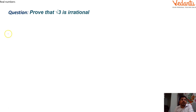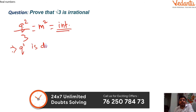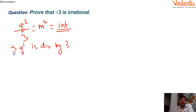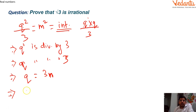From q² = 3m², we can rearrange to get q²/3 = m². Since m² is an integer and q²/3 is an integer, this implies q² is divisible by 3. Since q² = q × q, by the same argument, q is also divisible by 3. So we can write q = 3n for some integer n, meaning q is also a multiple of 3.